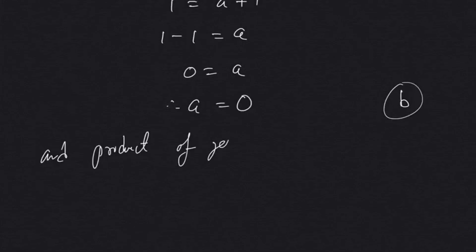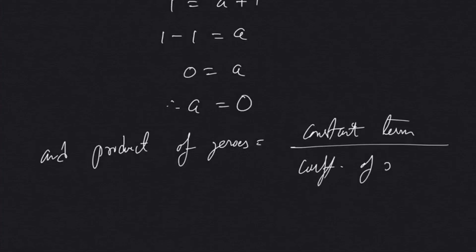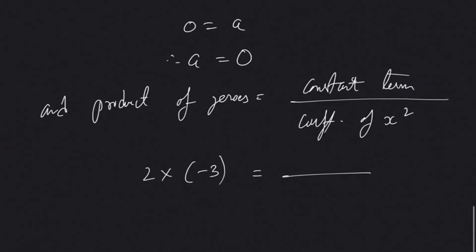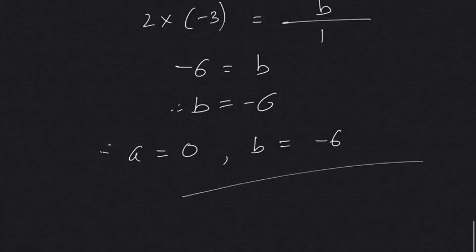Now we find b using the second relationship: product of zeros = constant term / coefficient of x². Product of zeros = 2 × (−3) = −6. The constant term is b and the coefficient of x² is 1, so −6 = b / 1, giving us b = −6. Hence, a = 0 and b = −6.